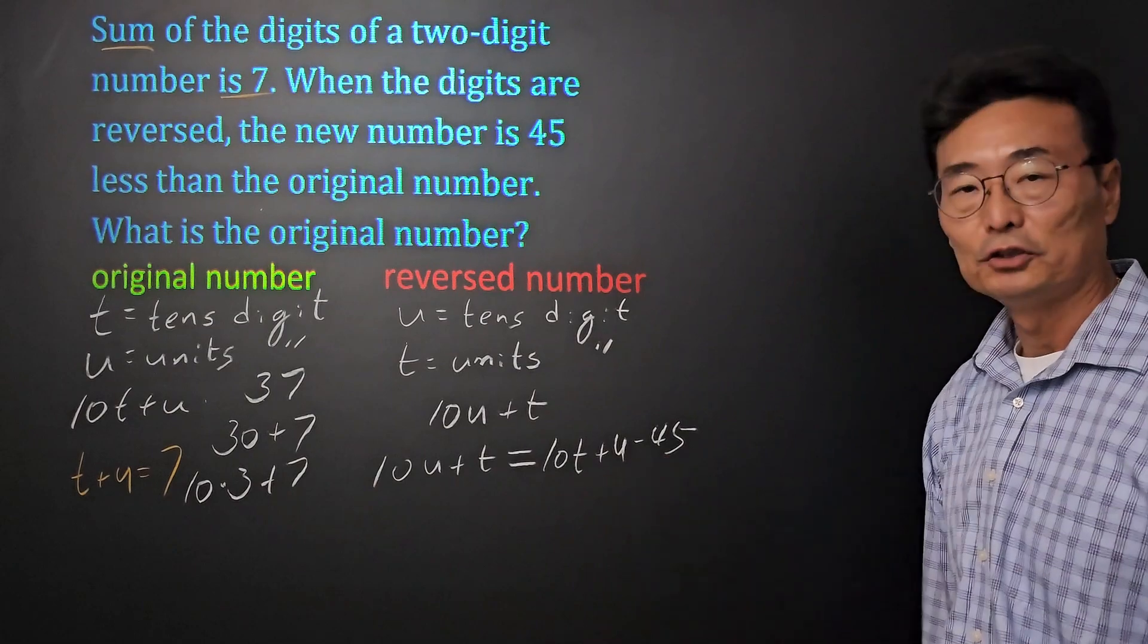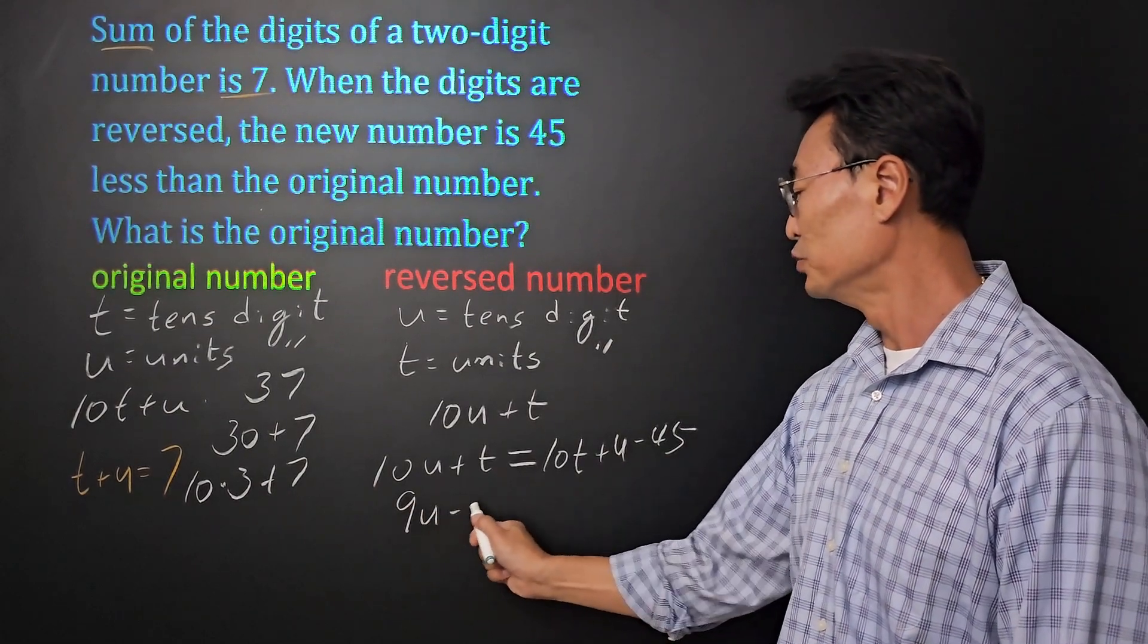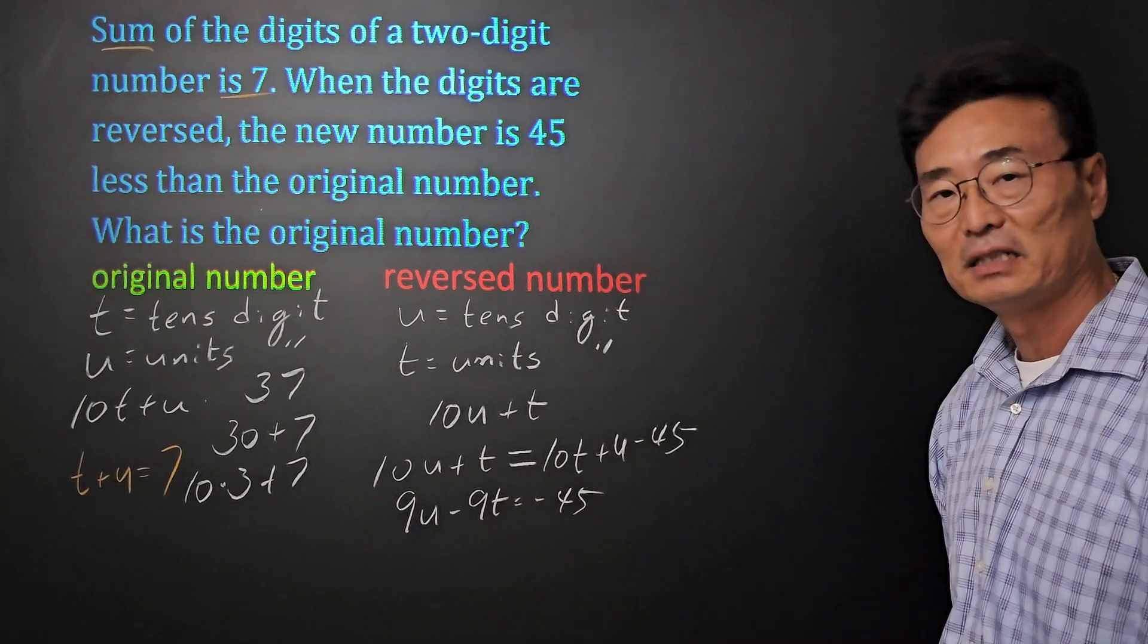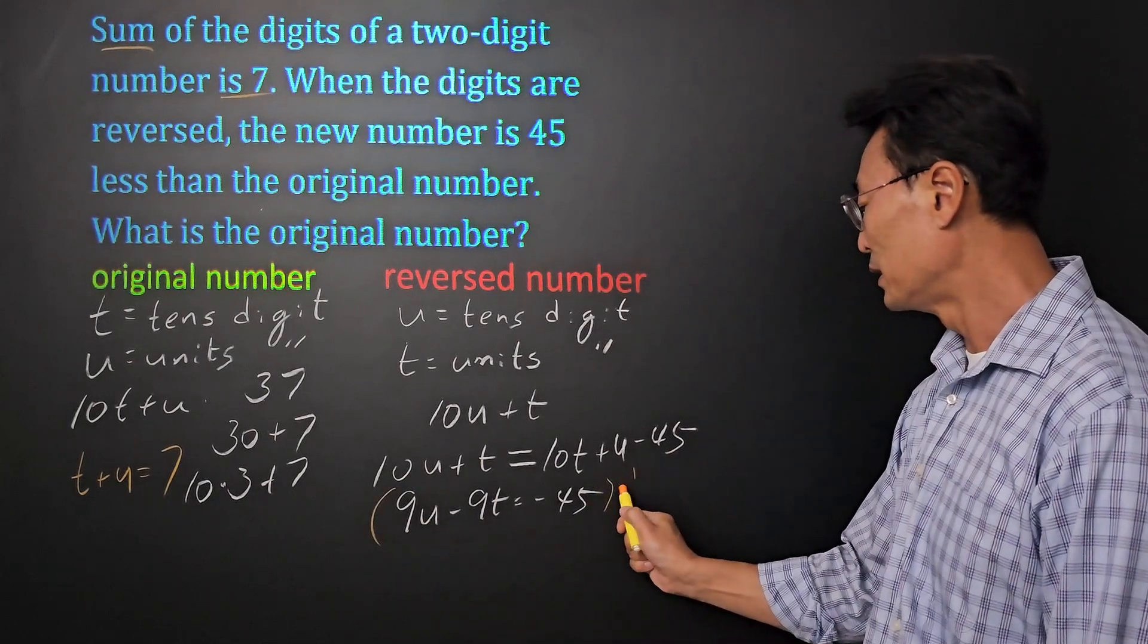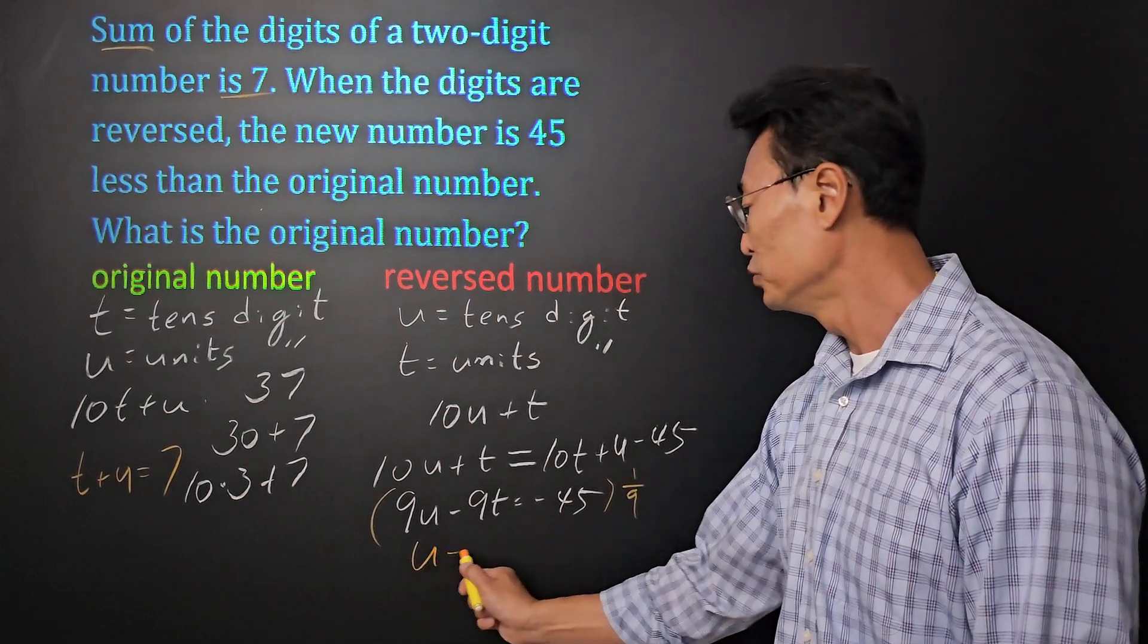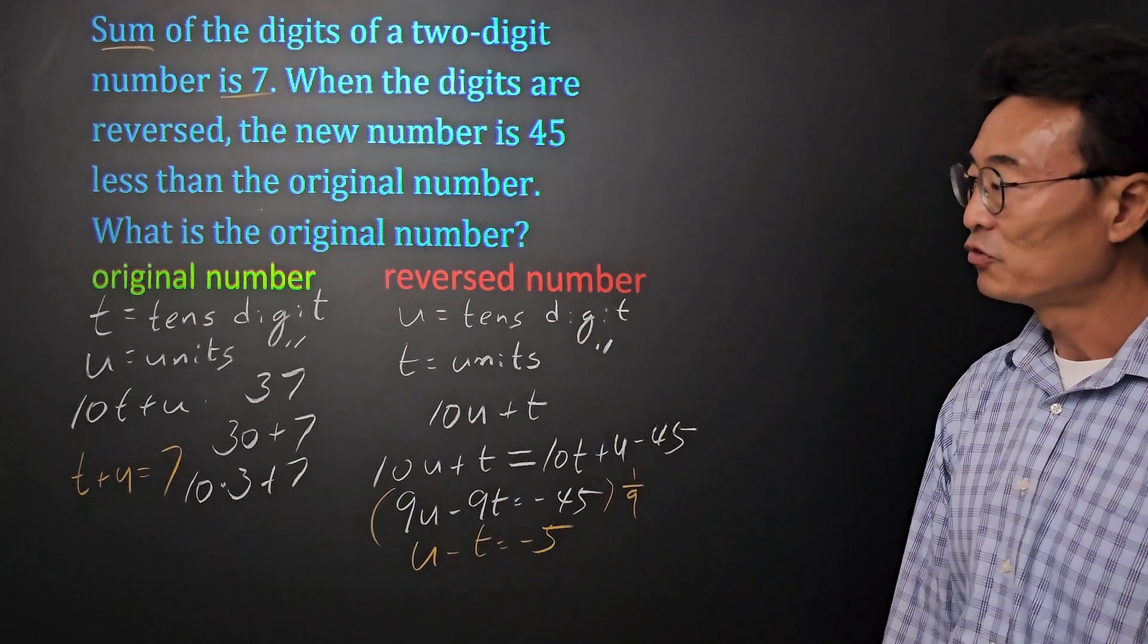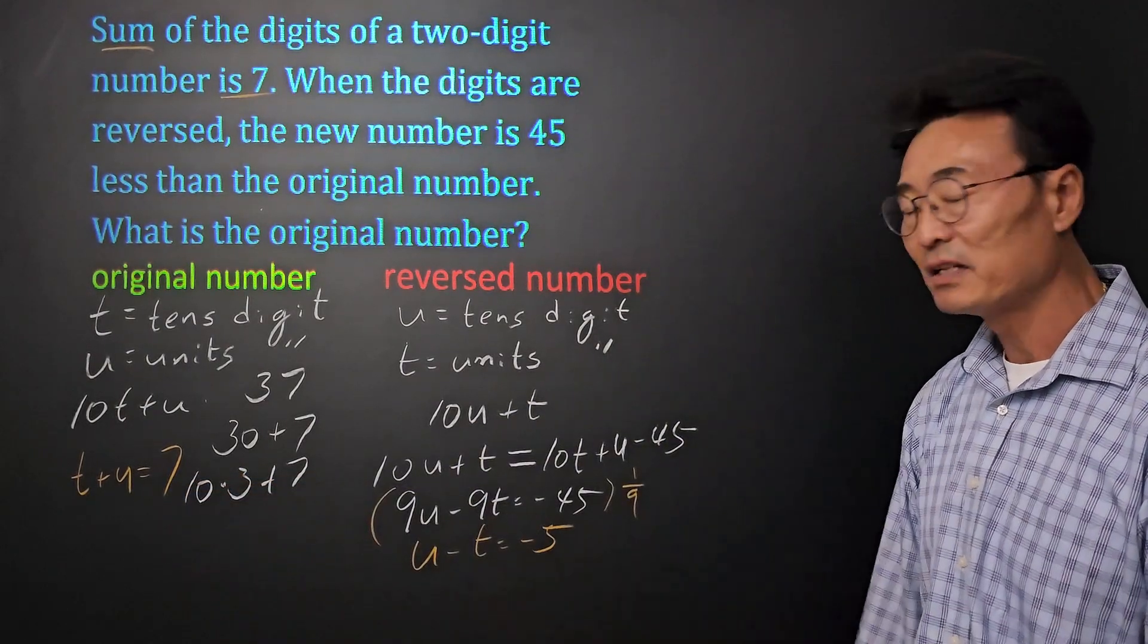If we simplify this equation, this becomes 9u minus 9t equals negative 45. And then if I go and multiply by 1/9, or divided by 9, same thing, we get u minus t equals negative 5. So we're going to be combining the t plus u equals 7 and the u minus t equals negative 5 to solve for t and u.